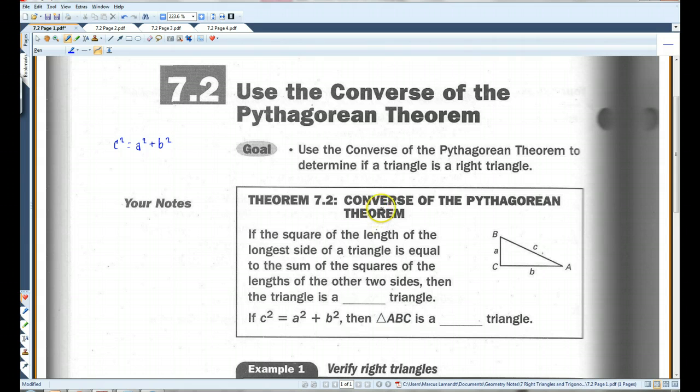This says the opposite of that. It says if the square of the length of the longest side of a triangle is equal to the sum of the squares of the lengths of the other two sides, then the triangle is a right triangle. Okay, so if this is true, then automatically you know it must be a right triangle.